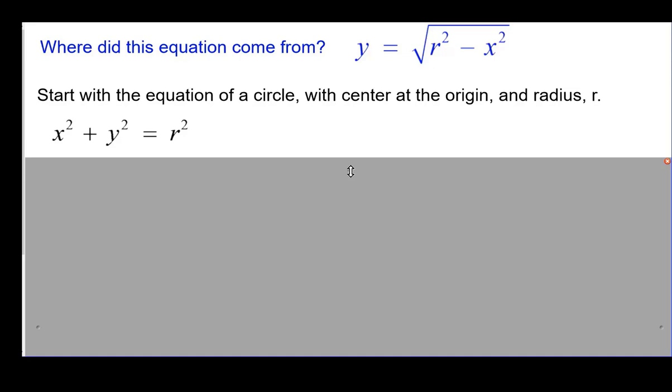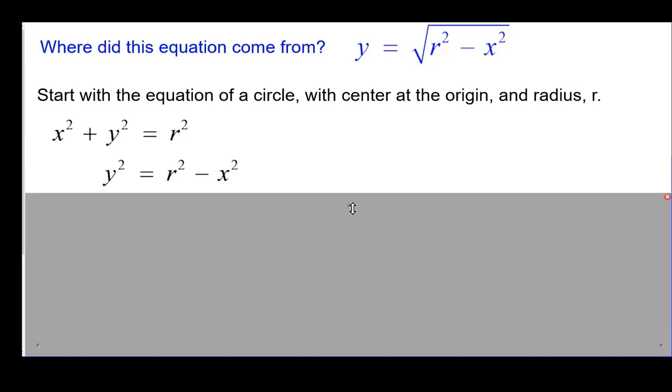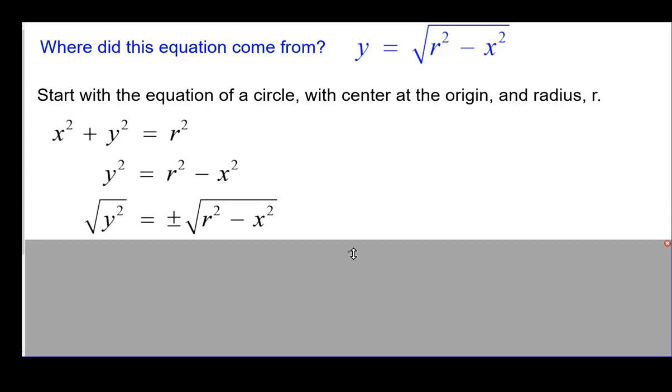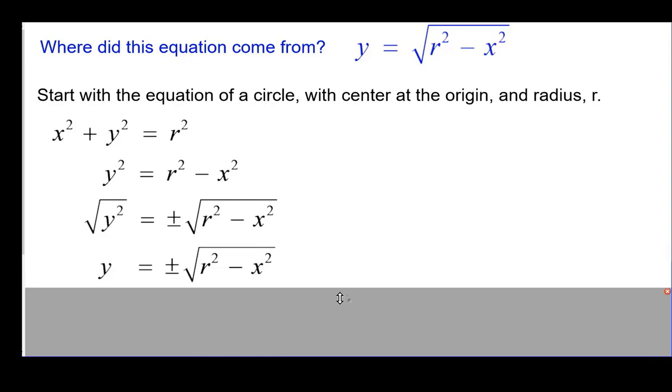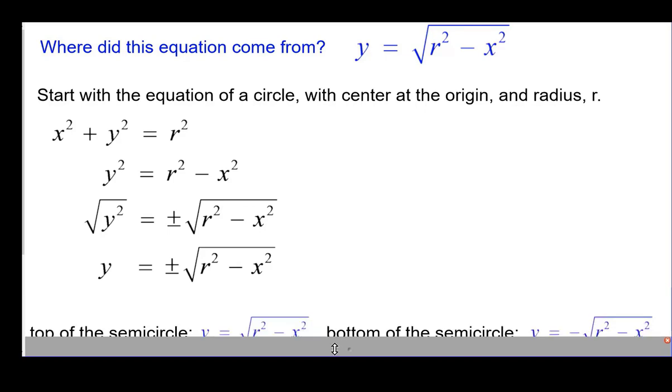We're going to solve this for y. So first I'm going to subtract x squared from both sides. Then I need to take the square root of both sides. Keep in mind that the square root, there are two of them, a positive and a negative answer here. And so we get y is equal to plus or minus the square root of that quantity. Now the positive square root turns out to be the top half of the semicircle, and the negative square root turns out to be the bottom half of the semicircle.